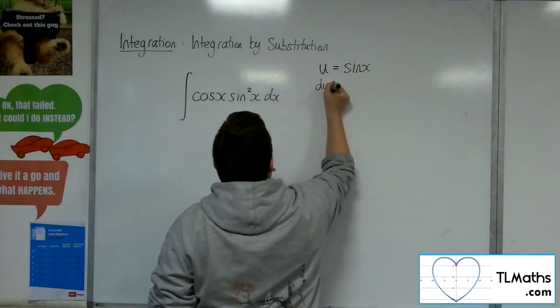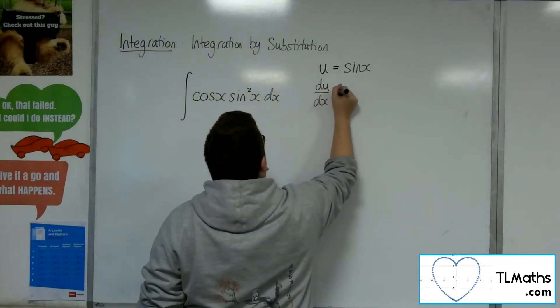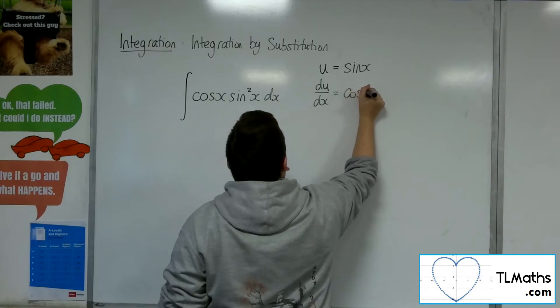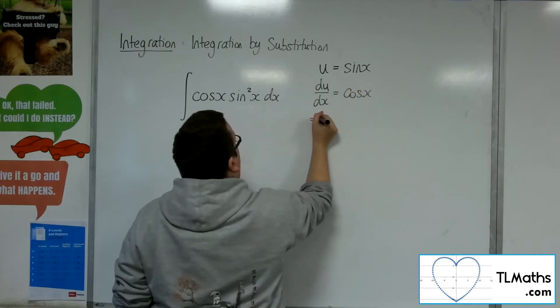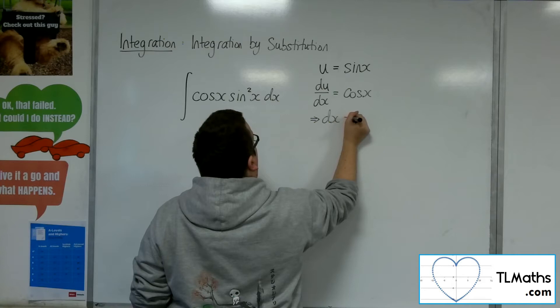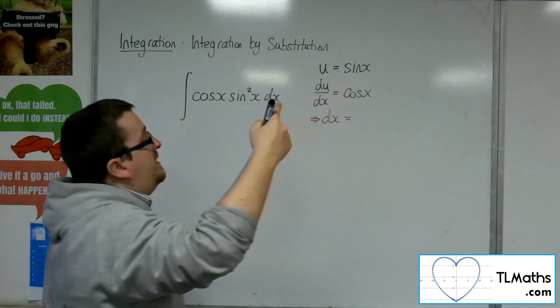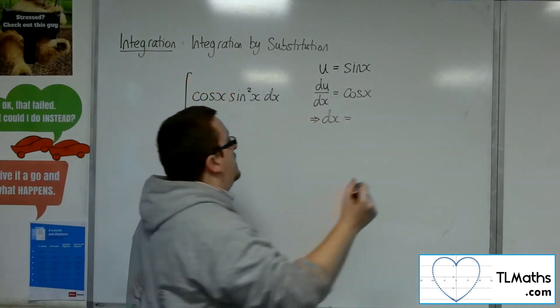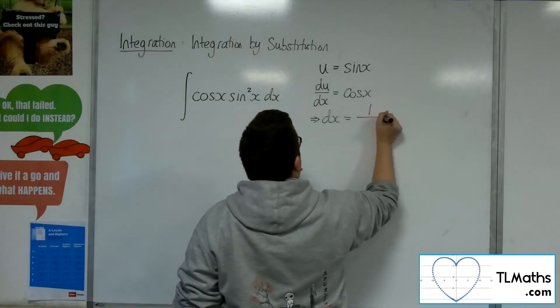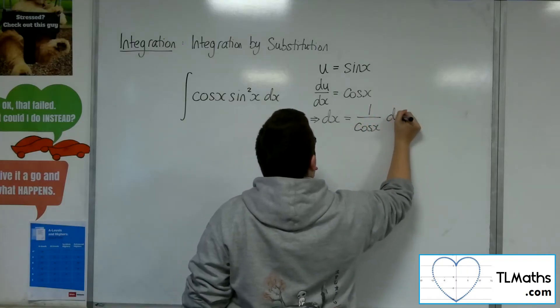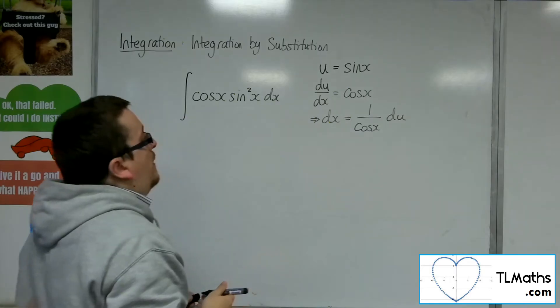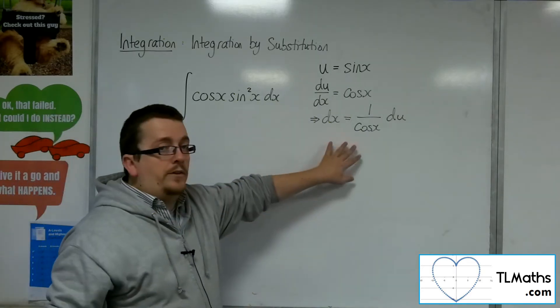So first step is always to differentiate du by dx, and then rearrange to get dx equals. So we can multiply both sides by the dx, divide both sides by the cosine of x. And we now have a replacement for the dx.